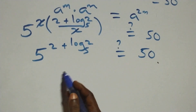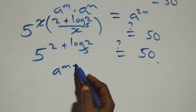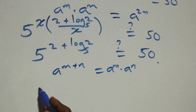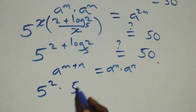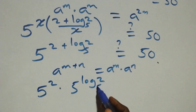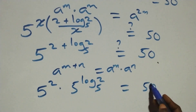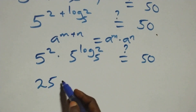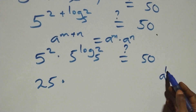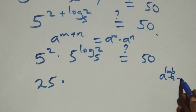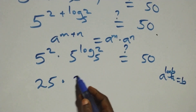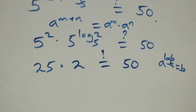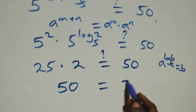This follows from the law of indices: a raised to power (m plus n) equals a raised to power m times a raised to power n. So this becomes 5 squared times 5 raised to power log 2 base 5, equals 50. Five squared is 25. Using the identity a raised to power log b base a equals b, we have 5 raised to power log 2 base 5 equals 2. So 25 times 2 equals 50, which equals 50.